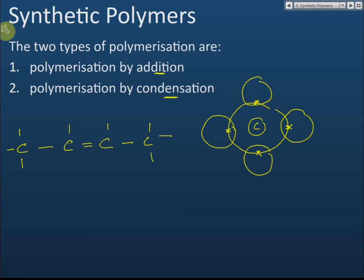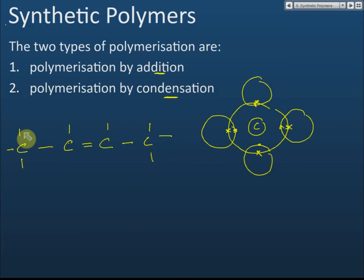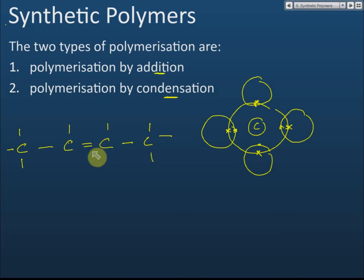Carbon shares four pairs of electrons with other atoms to form four covalent bonds. Each line drawn represents one covalent bond. Sometimes atoms can share more than one pair of electrons — for example, two carbon atoms sharing two pairs of electrons, which is called a double bond.